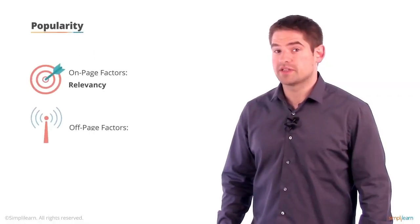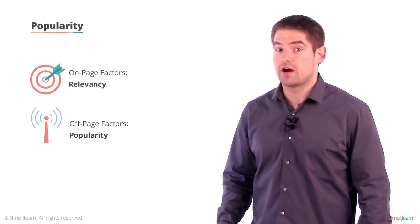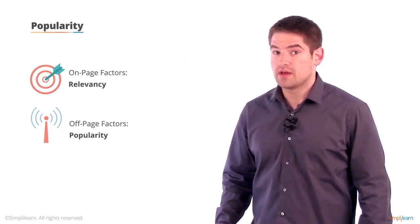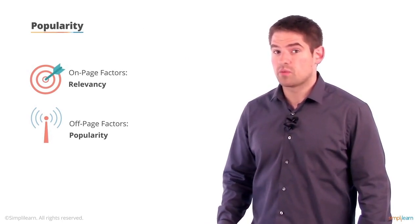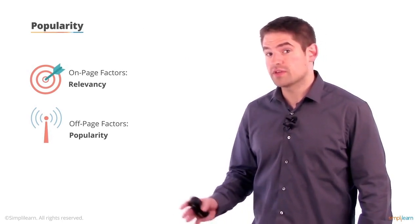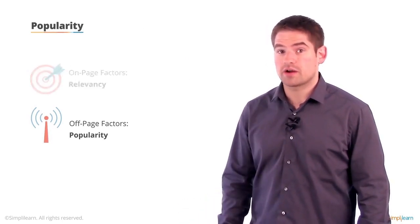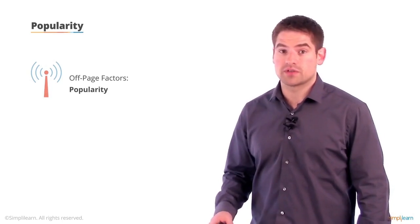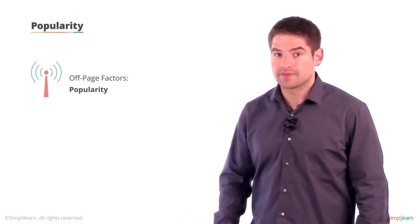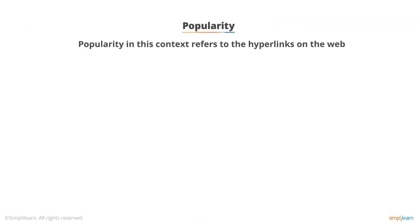In the section on on-page optimization, we talked about factors that centered on relevancy. In this section, we're going to go in a different direction — we're going to talk about the signals that focus on popularity. So what does popularity mean in this context? Well, it's actually quite simple. Popularity always relates to links, to hyperlinks on the web.